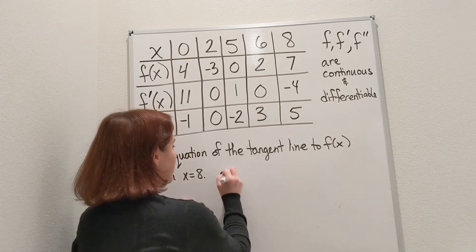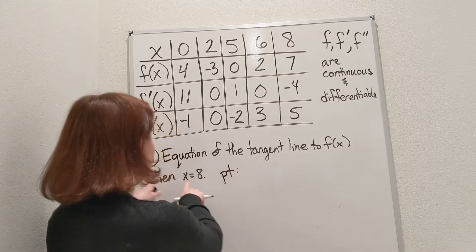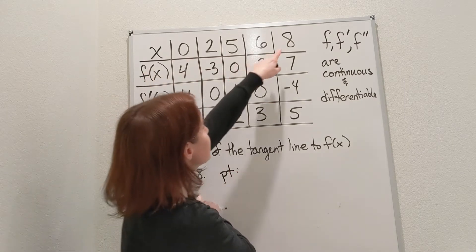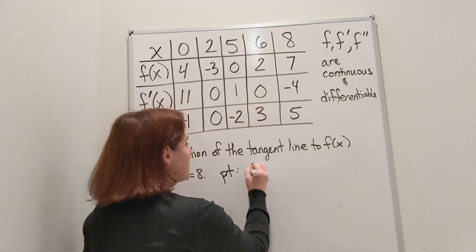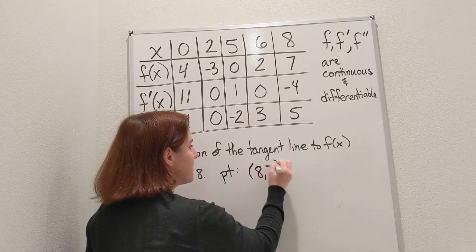So let's take a look at the point. What point do I need? x is 8. So if x is 8, y, or f(x), is 7. So I have the point (8, 7).